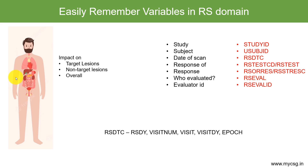In all findings domains, whenever we have a date variable, we should automatically remember that the date is associated with a pre-specified or unscheduled visit. Three variables should come to mind: VISITNUM (numeric notation of the visit), VISIT (character description of the visit), and VISITDY (the target day for each scheduled visit). We also derive the EPOCH variable to identify whether the visit occurred during screening, treatment, or follow-up. The study day for RSDTC is stored in RSDY.